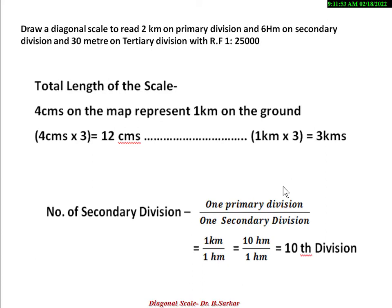Now, the number of secondary divisions. The formula is: 1 primary division divided by 1 secondary division. One primary division equals 1 km and 1 secondary division equals 1 hectometer. Since the units are different, we convert: 1 km equals 10 hectometer. Dividing 10 hectometer by 1 hectometer gives 10, so the number of secondary divisions is 10.